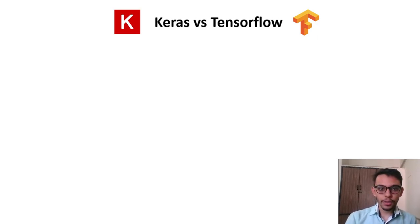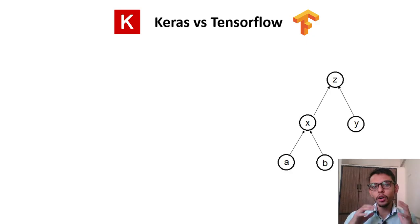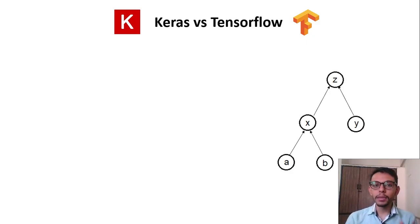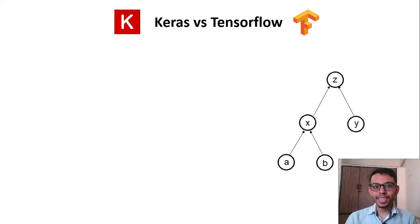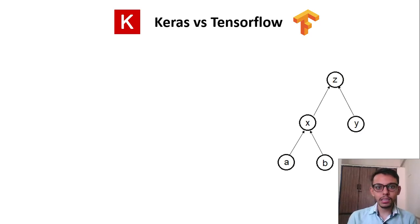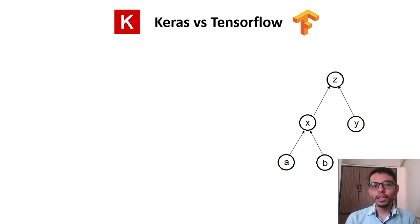The way TensorFlow works is by creating a computational graph which is later executed by passing the input values. First we build a computational graph and then we pass some input which is multi-dimensional vectors. These multi-dimensional vectors are also called tensors. These tensors then flow through the computational graph to give us the proper output — that is why the name is TensorFlow.